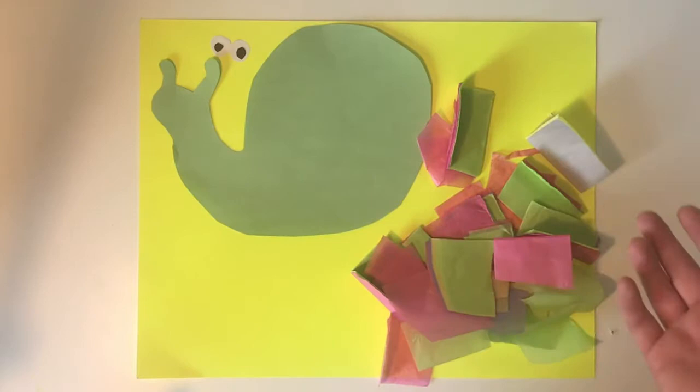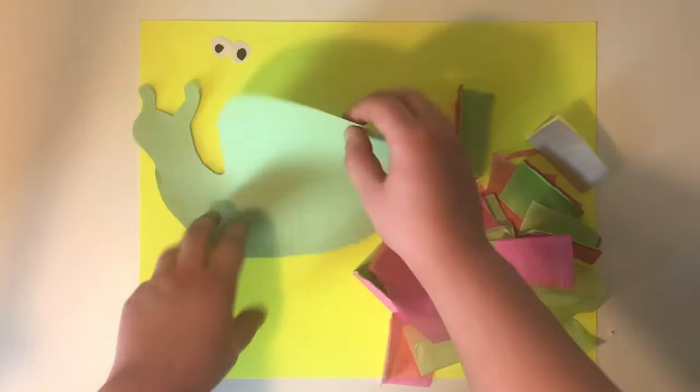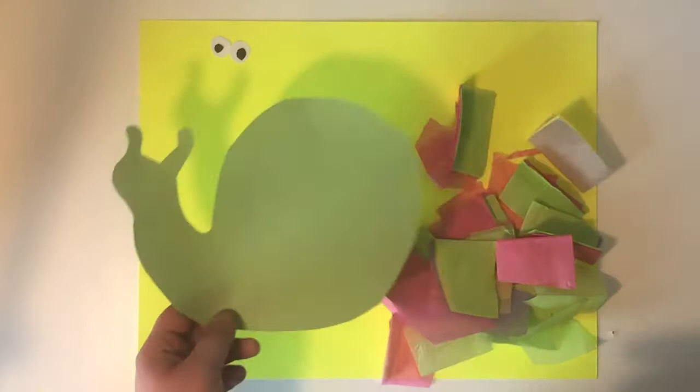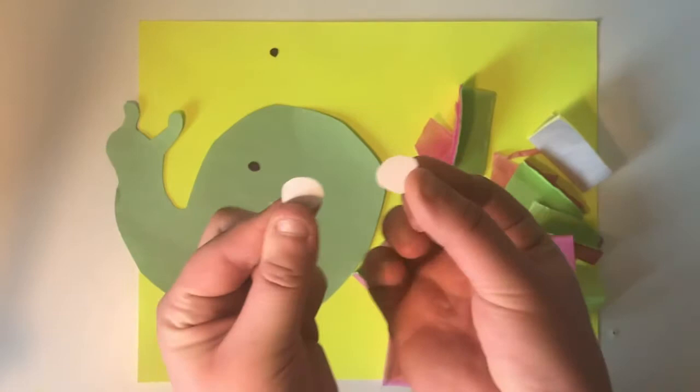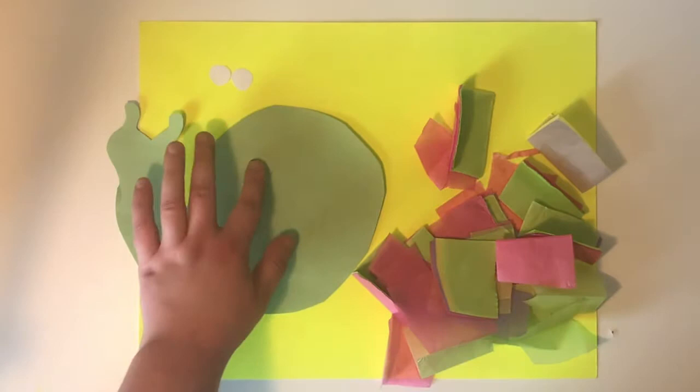You're going to need to cut out a piece of construction paper in the shape of a snail, something that looks sort of like this. You're going to need two white circles for eyes, just like this. Then you're going to need two black circles that are smaller than the white circles to go inside the white circles for the eyes.